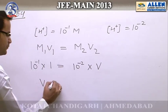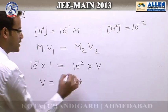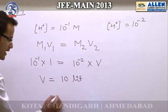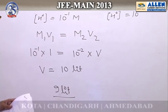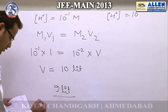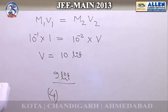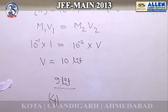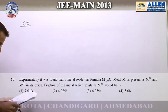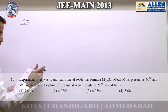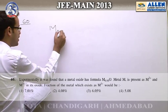The final volume works out to be 10 liters. Therefore, we must add 9 liters of water to the original solution. The correct answer is option 4.